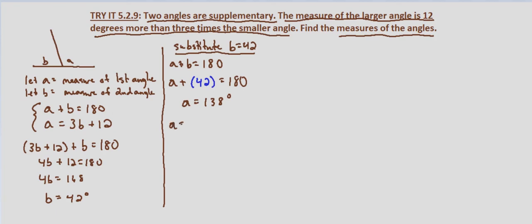Now let's use our second equation to verify. A equals 3b plus 12. So that equals 3 times 42 plus 12. So 3 times 42, that's 126 plus 12, which equals 138 degrees.